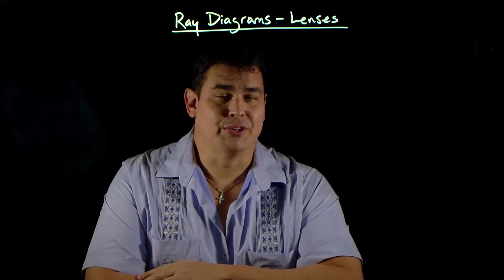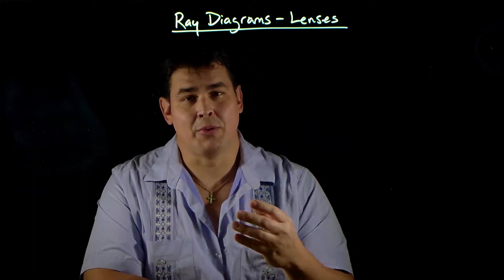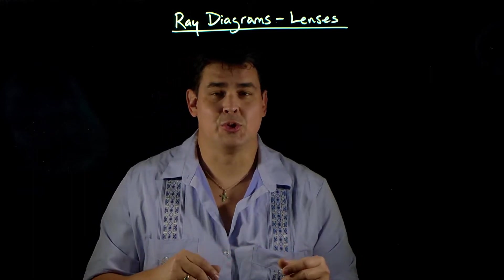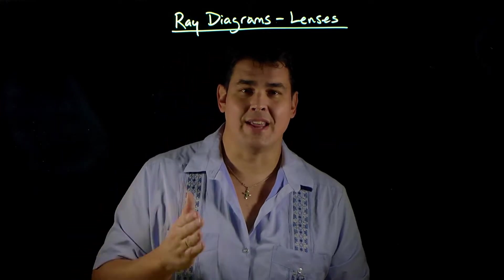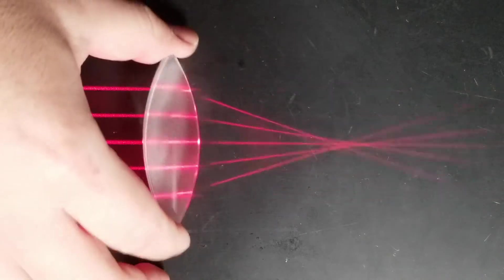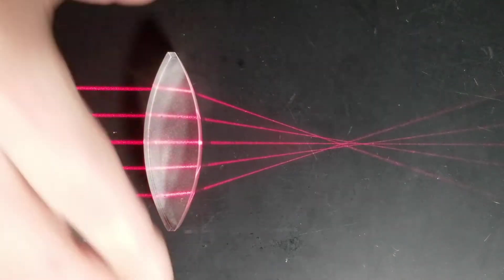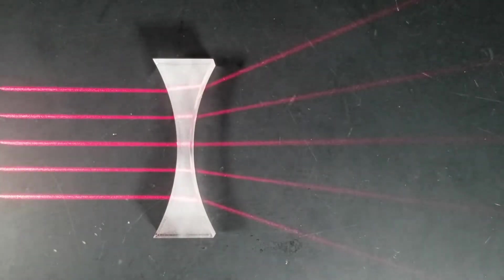At this point we know about refraction, and refraction has some pretty cool uses, the main one being lenses. There are two types of lenses: a converging lens, which causes parallel rays of light to converge to a single point, and a diverging lens, which causes parallel rays of light to diverge away from each other.